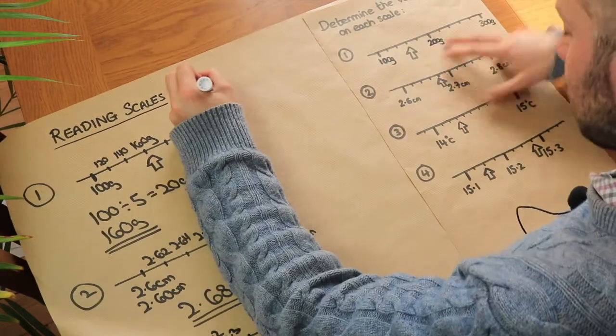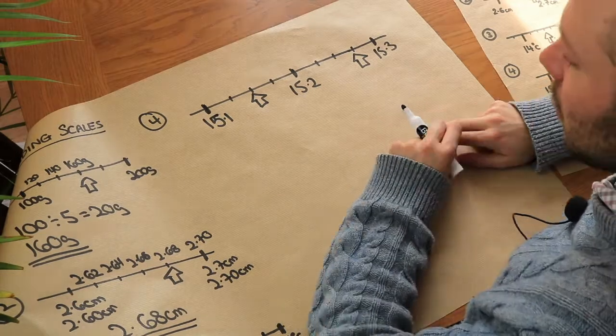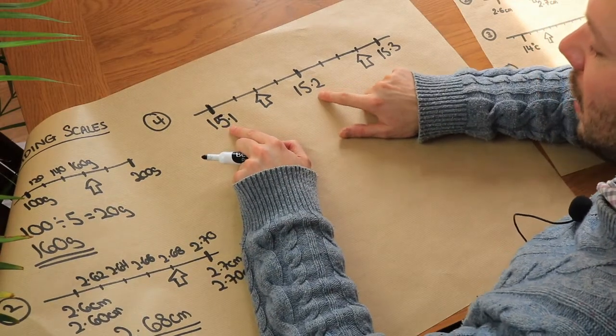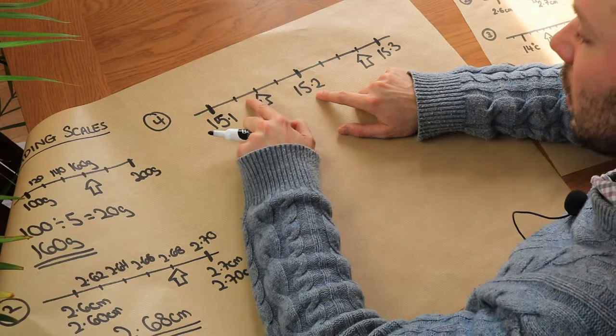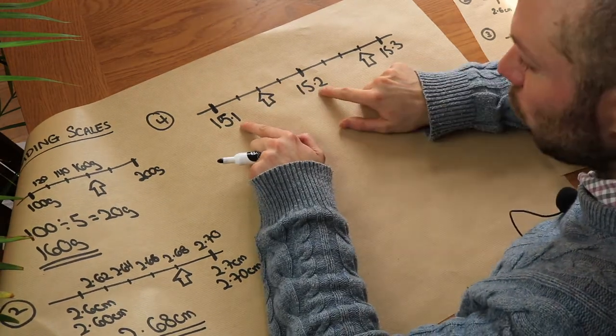And this very last one, now this time we want to find the value of these two arrows. So if we look at this we've got 15.1, 15.2, how many regions has it been divided up into? One, two, three, four. And the difference is 0.1, so we need to divide up 0.1 into 4.